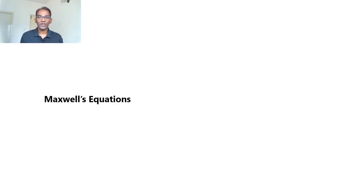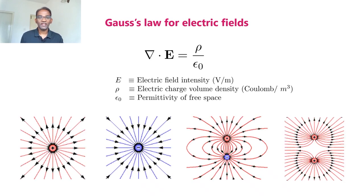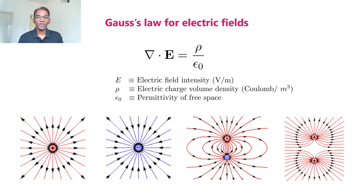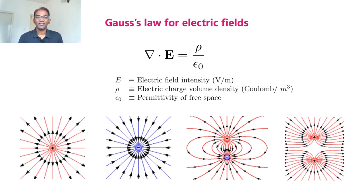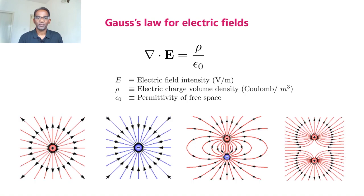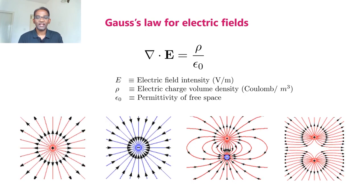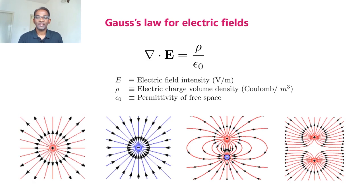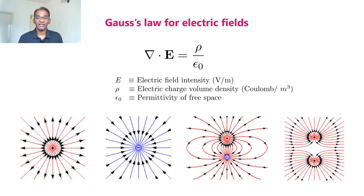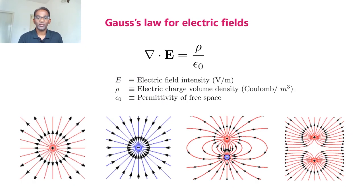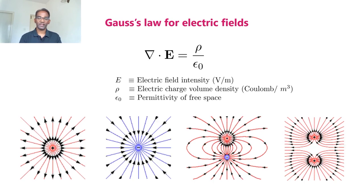Now we'll dwell a little bit in detail on Maxwell's equations. The first equation is known as Gauss's law for electric fields. This equation states mathematically that del dot E equal to rho divided by epsilon zero, where E is the electric field intensity expressed in volt per meter, rho is the electric charge volume density expressed in coulomb per meter cube, and epsilon zero is the permittivity of free space.